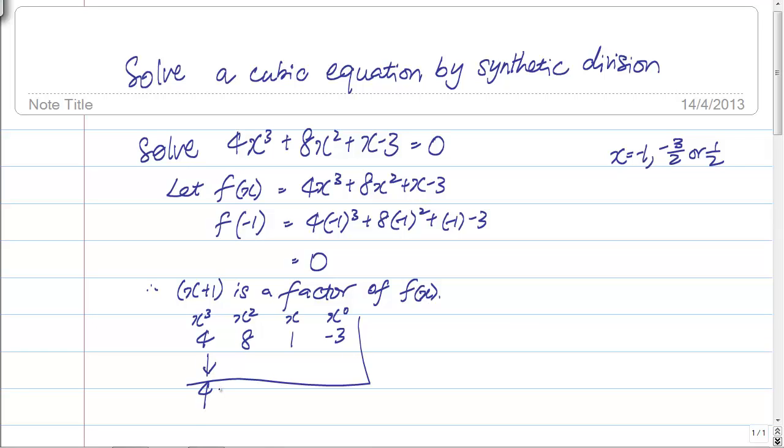This is what we're going to do. Bring this 4 down. Multiply by minus 1. How do I know it's minus 1? Because we've gotten the value of x to be minus 1 in step 1. This is negative 4. Add up these two numbers to give us 4. Carry on. Multiply by minus 1 again. You get minus 4. Add up these two numbers. You get minus 3. Multiply by minus 1 again. You get 3. Add up these two numbers. You get 0.